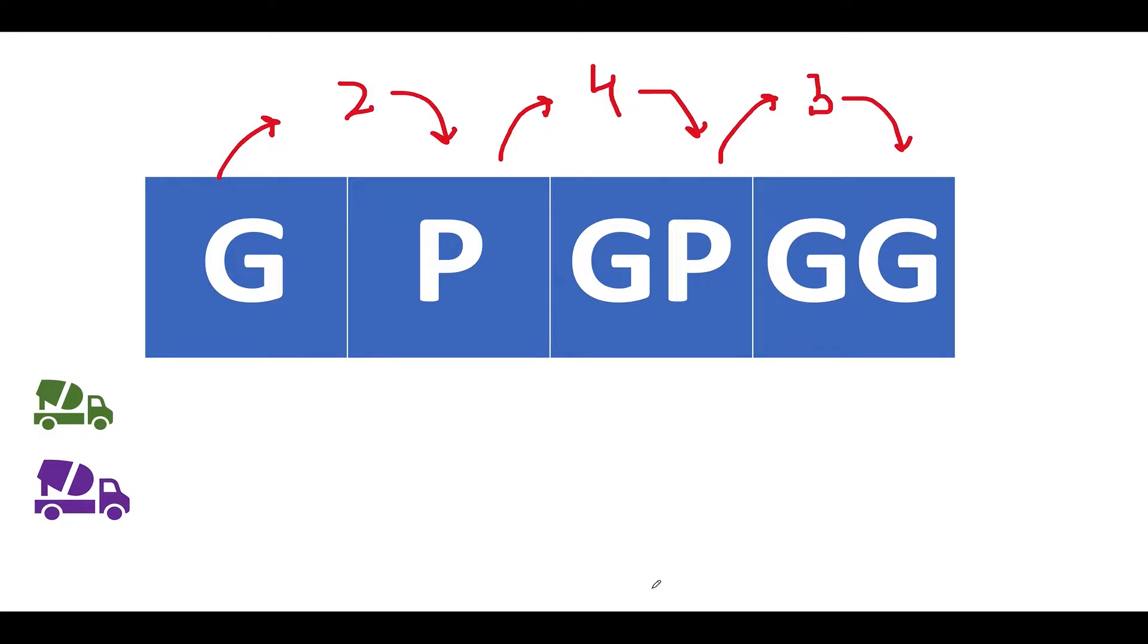So we have the garbage configuration something like this: the first garbage is of type glass, the next garbage is of type paper, the next garbage junk is of type glass and paper, and the next one is of type glass and glass. There's a third type of garbage that is also there which is metal, which is not in this case. So in detail, how many trucks would be needed?